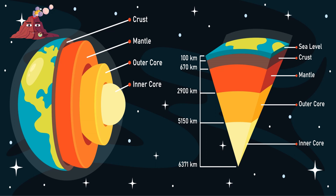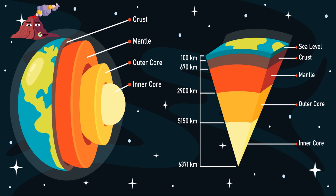The inner core is the very center of the Earth, and it's made of solid metal. It's also made mostly of iron and nickel, and it's under even more pressure than the outer core. The temperature at the center of the inner core is so high that the metal is melted, but because of the extreme pressure, it's still solid. Each layer has its own unique characteristics and plays an important role in shaping our planet.